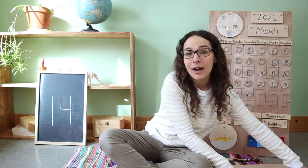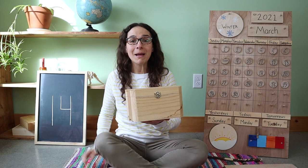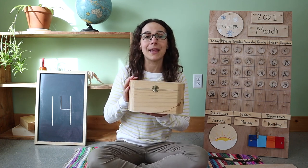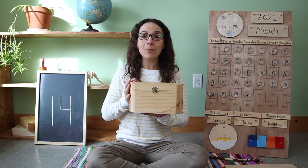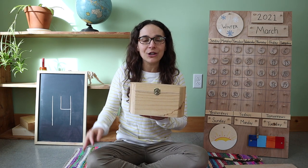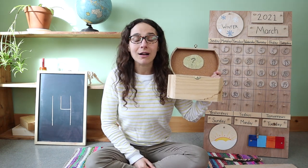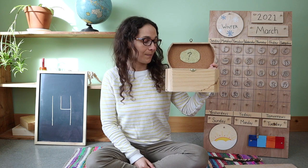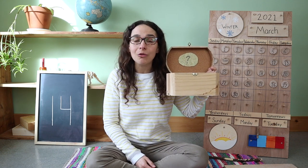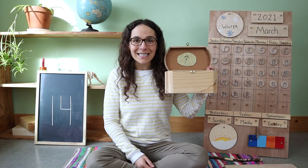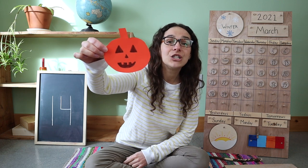Now it's time to move on to the number and letter box. I wonder what we'll find inside. Inside this box I have something that starts with the letter J. Are you ready for your first clue? Inside this box I have something that is orange, has hollowed out facial expressions, and is usually seen around Halloween time. Do you know what it is? Let's take a look.